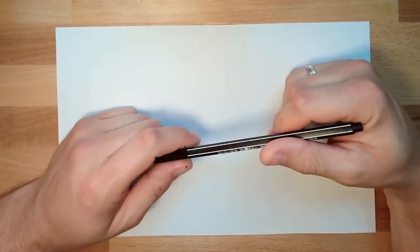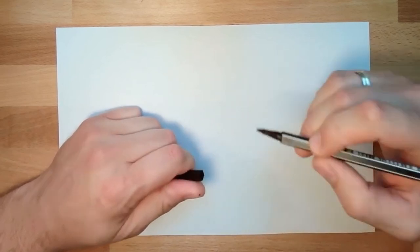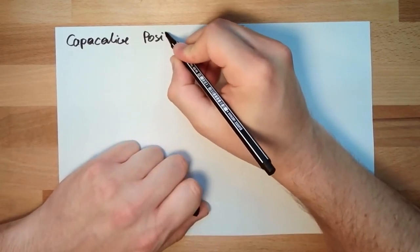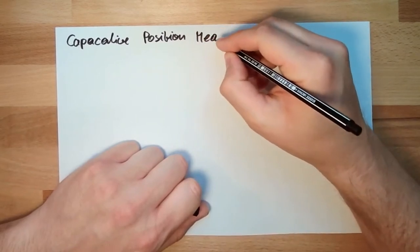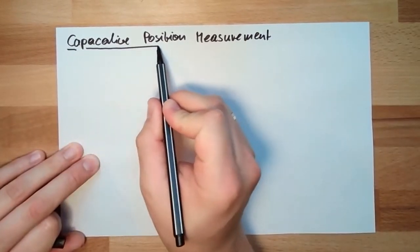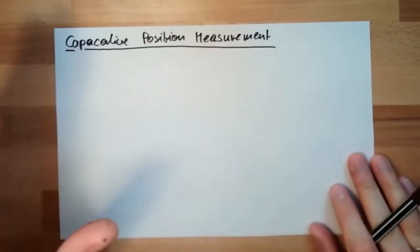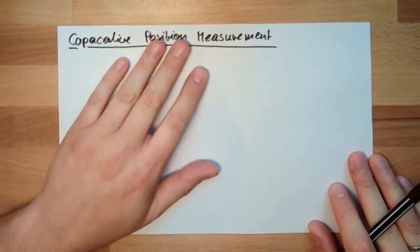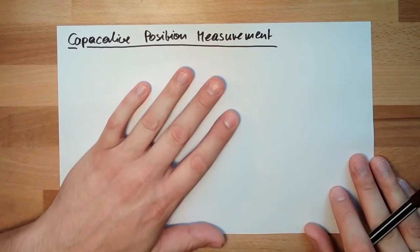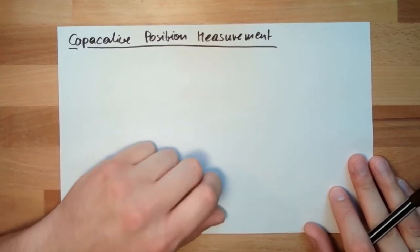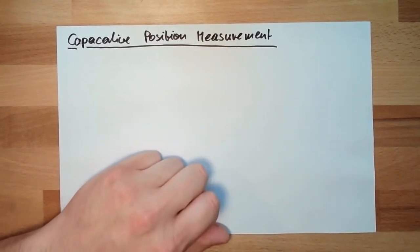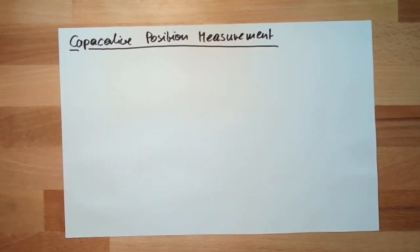Hello and welcome. This time we are talking about capacitive position measurement. The trick is we measure the capacity of a capacitor, and we want to change the capacity of the capacitor in a way that reflects the movement of something. There are several possibilities how this might be achieved.